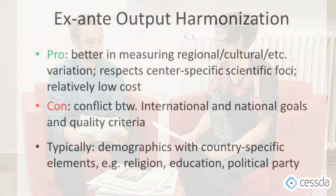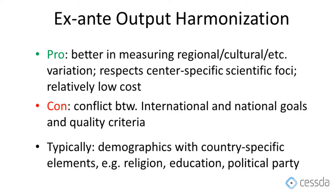The last type of harmonization we're talking about before we move on is ex-post output harmonization. This is actually a transitional solution where you work with already existing data, reuse it, and harmonize it to do your comparative statistical analysis. As you work with existing data, this can come at a relatively modest time and cost. But you have to keep in mind that it usually has the lowest degree of comparability, and as you harmonize existing data, you might lose a lot of information, which can also create a low degree of completeness.